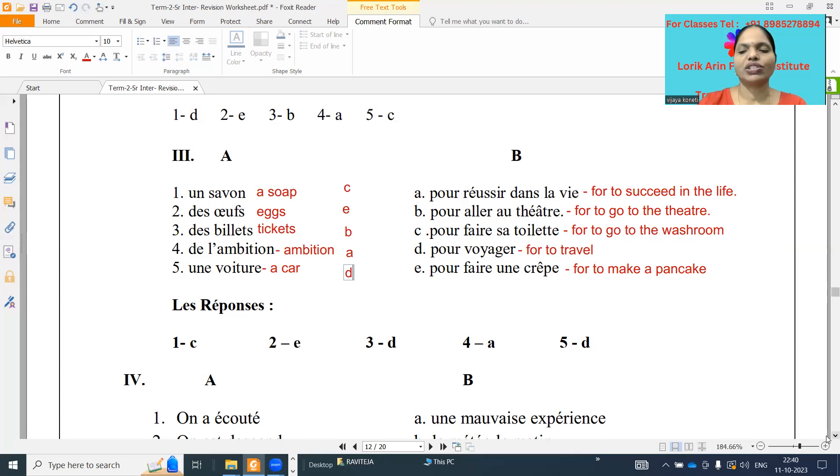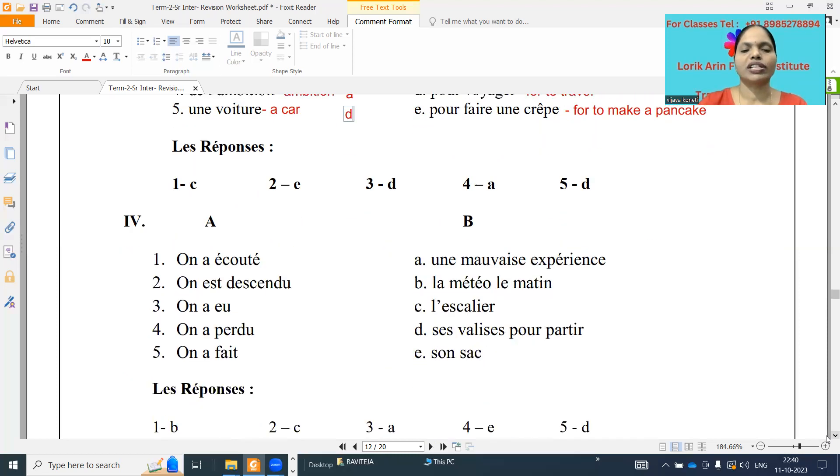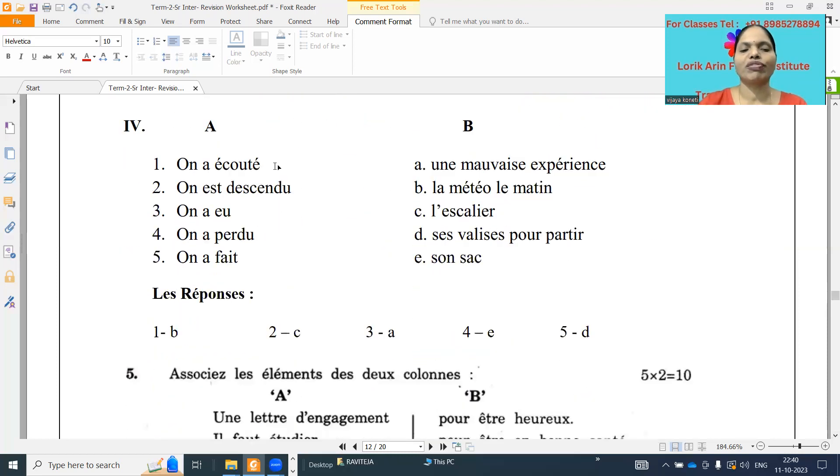And next one, question quatre. Question number four. C, on a écouté. Means what it is, we listened. So what we listened actually, weather report. La météo. So the weather report in the morning. And so the option is B it is. Okay, first we will see all the meanings.